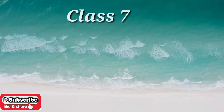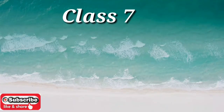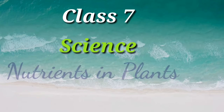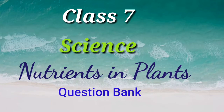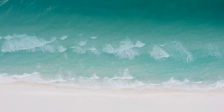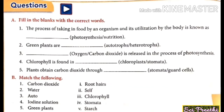Welcome to Class 7 Science. In the chapter 'Nutrition in Plants', we are going to discuss question answers. First, we will discuss filling the blanks with correct words. The first question: the process of taking in food by an organism and its utilization by the body is known as — the answer is nutrition.